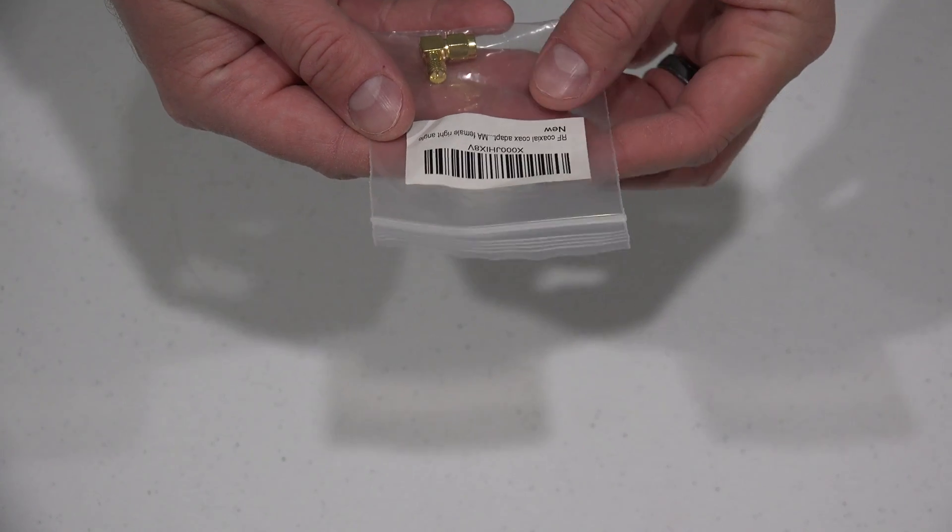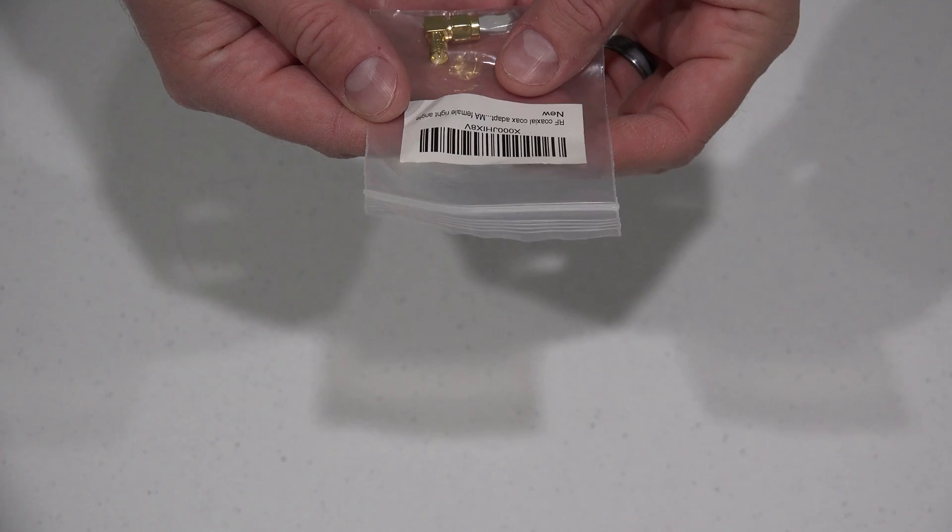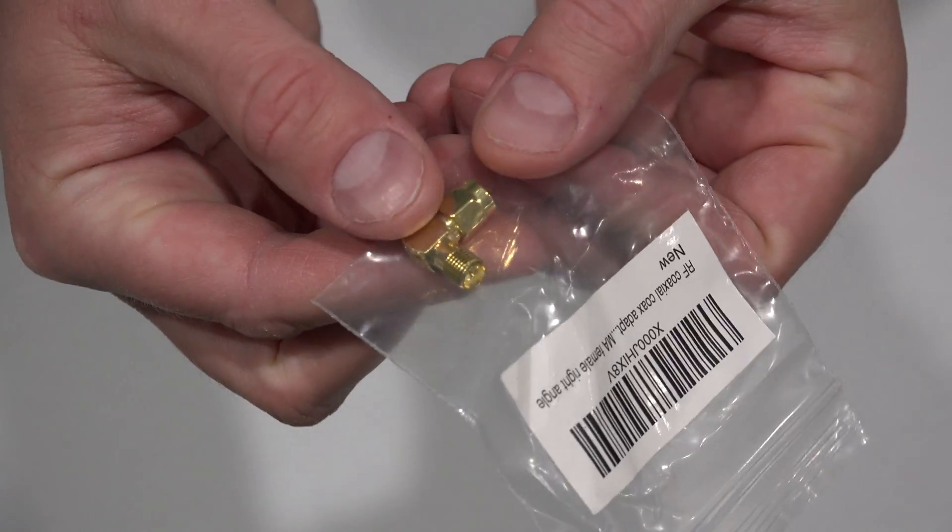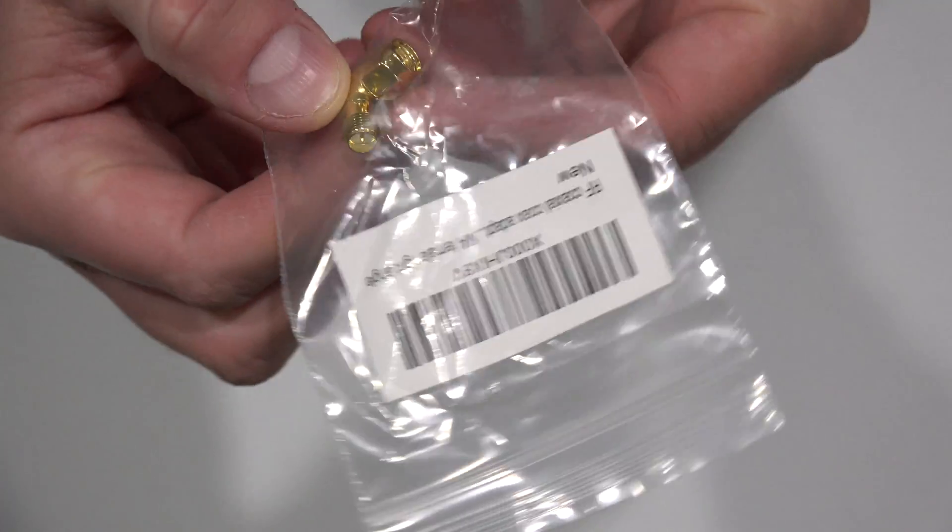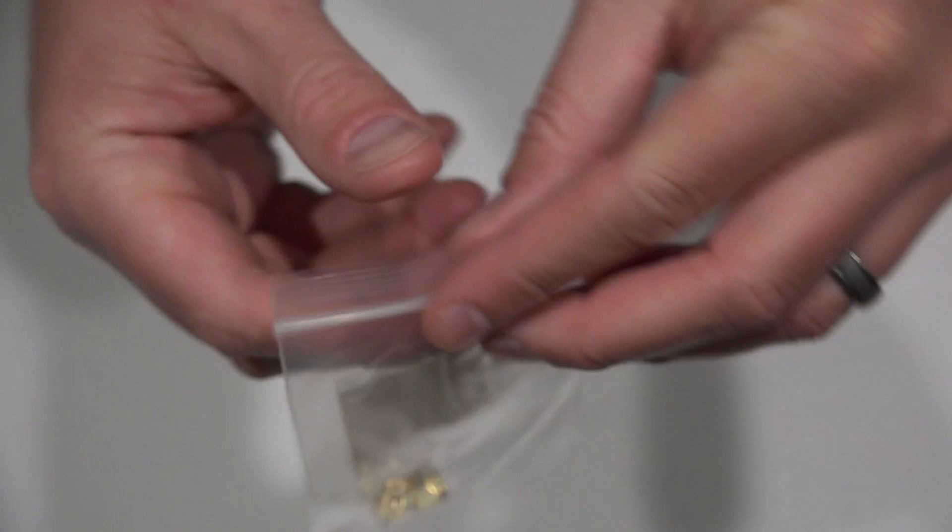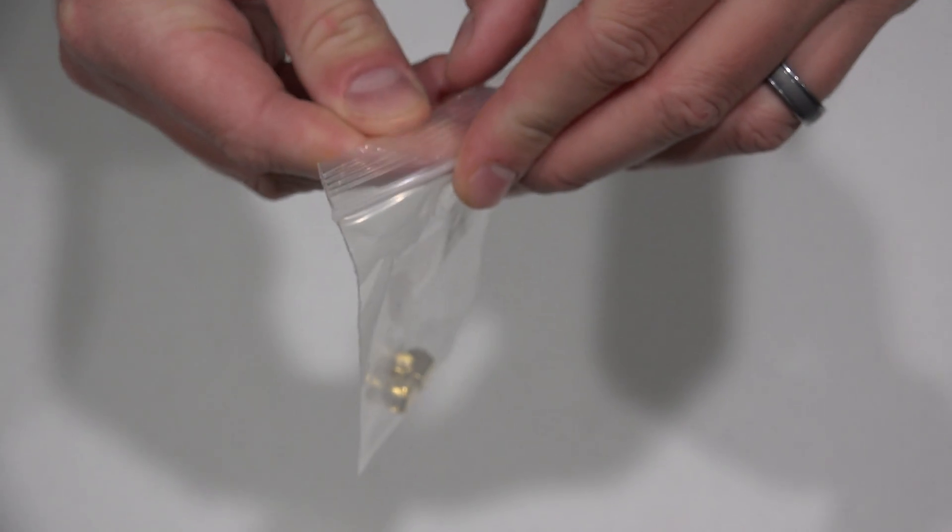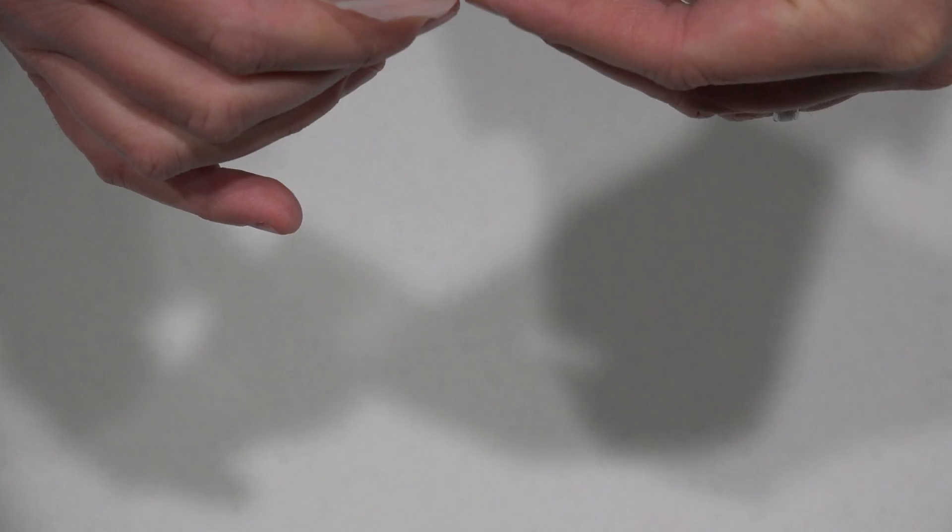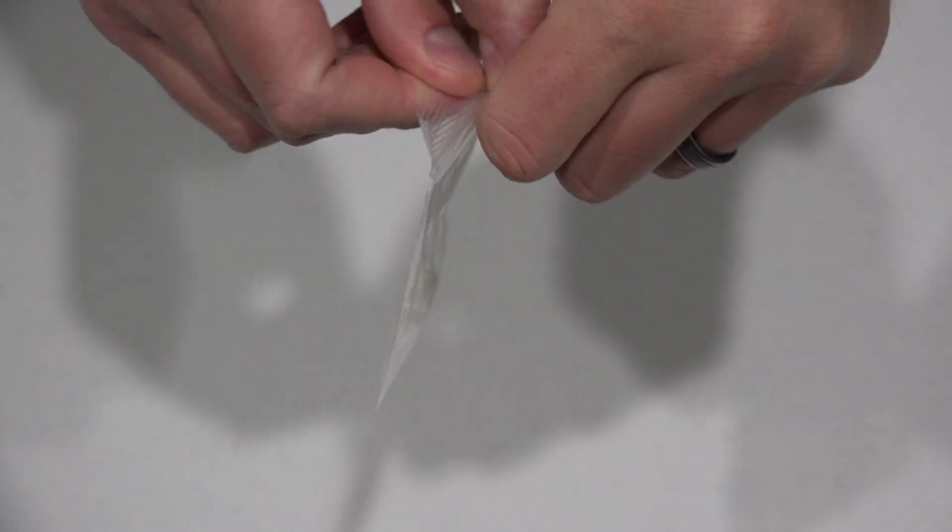Now this is an SMA female right angle connector. I got this to go on the bottom of my Phantom 2 because having that right angle is optimal in my opinion for the placement of the antenna on the bottom of the Phantom 2 for FPV.